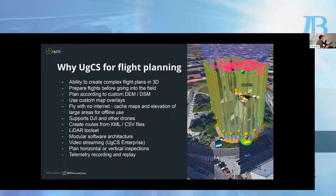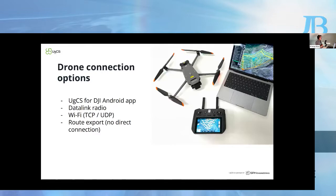You're able to fly vertical inspection missions — not only horizontal terrain-following missions but also vertical ones. All flights done with UGCS are recorded locally on your computer, so at a later time you're able to replay the telemetry from those flights. Regarding drone connection: with most DJI drones, you just connect by installing the UGCS for DJI app on your Android device or DJI smart controller. You need the computer and the smart controller on the same network — that doesn't require internet access.